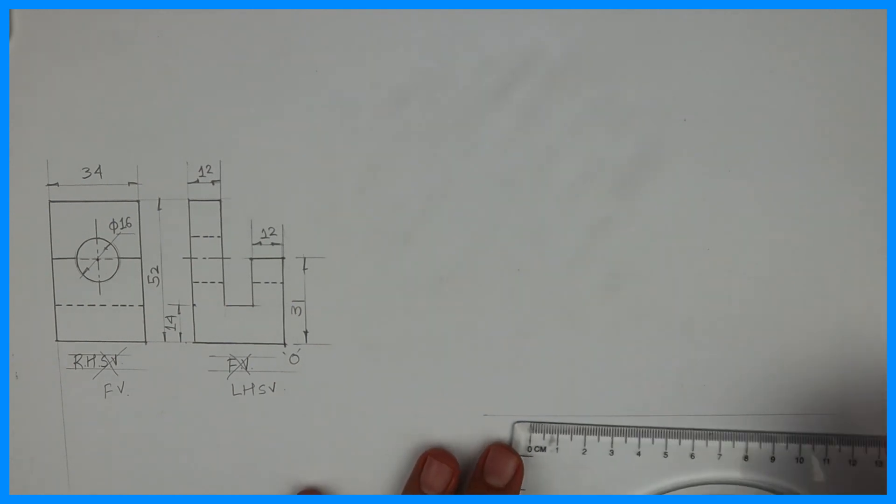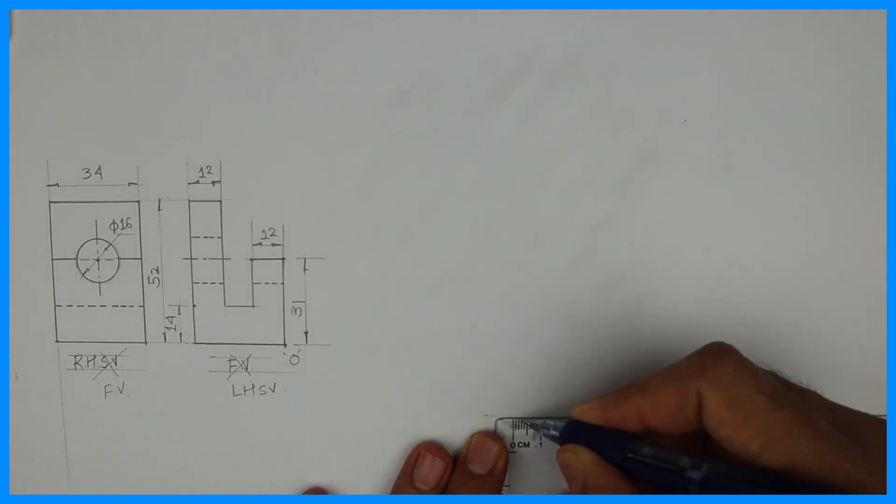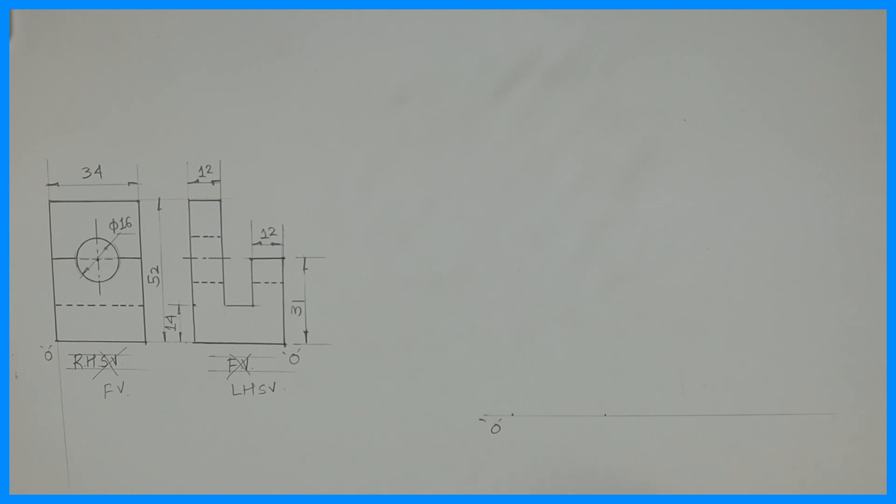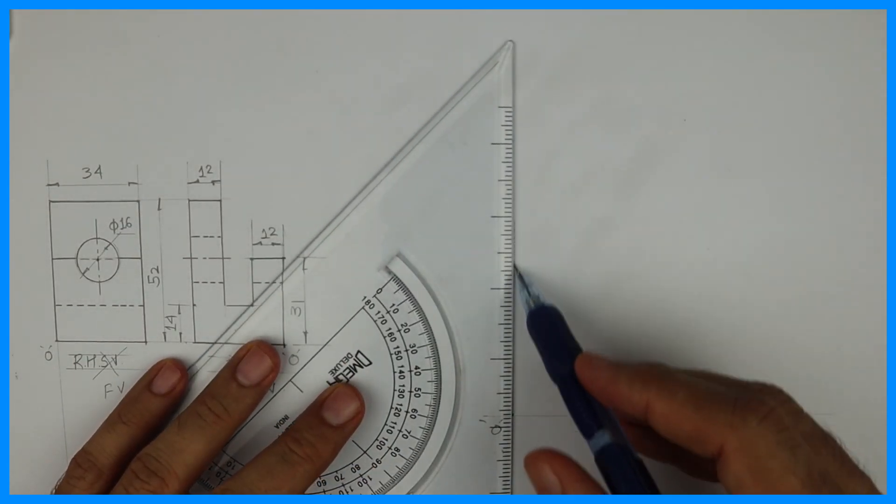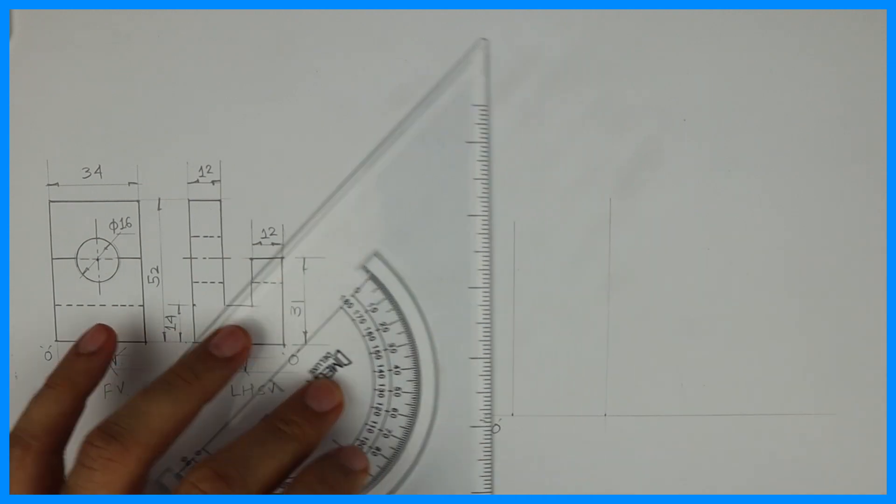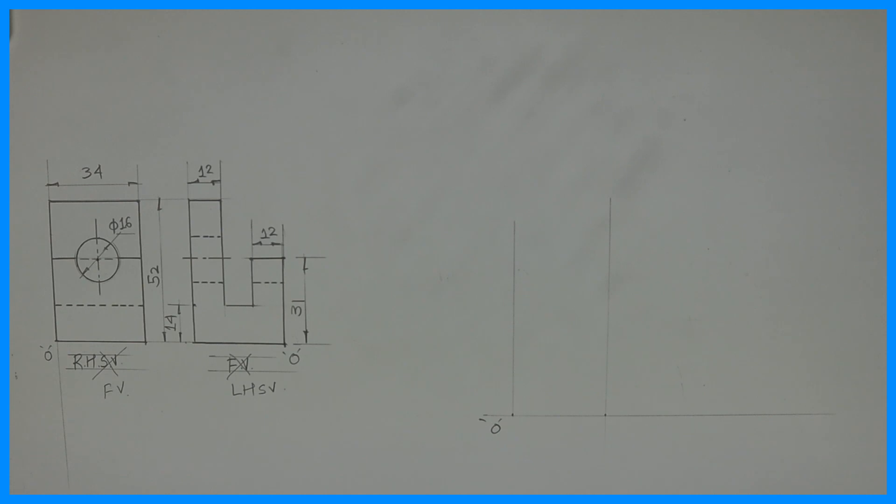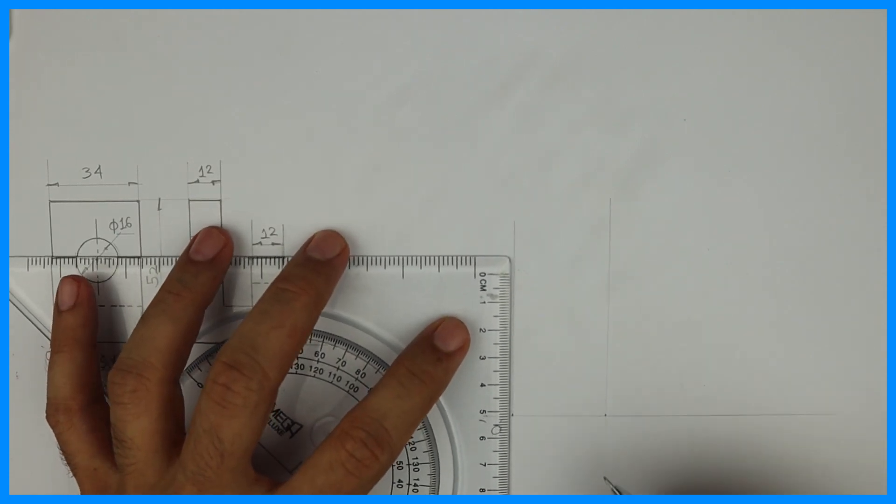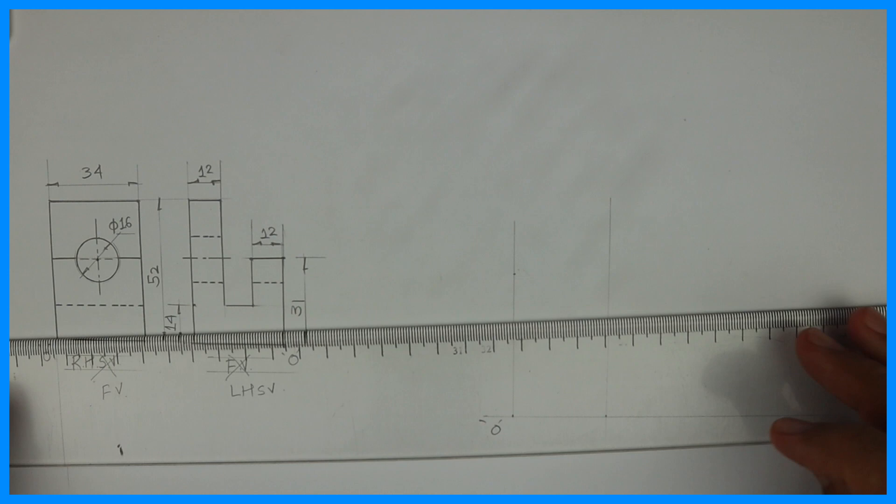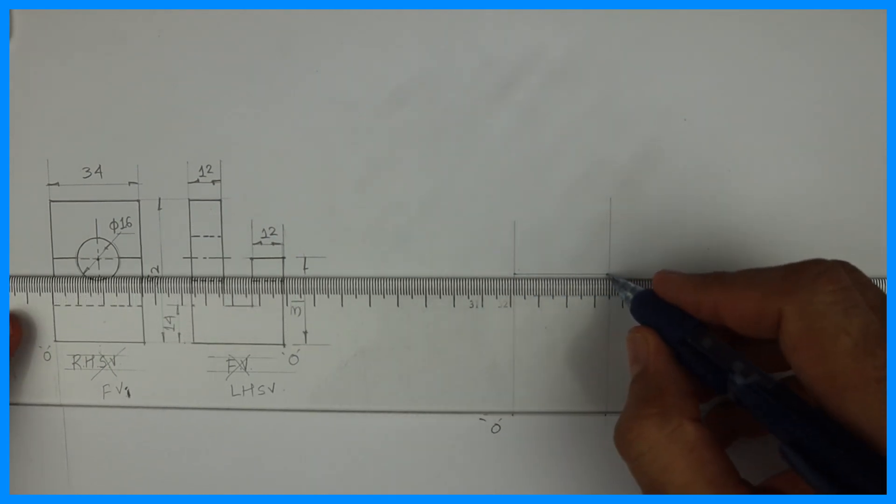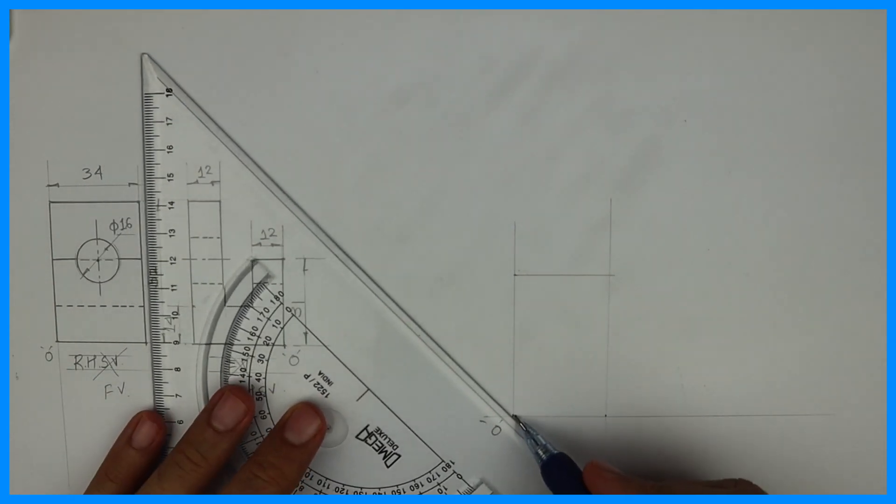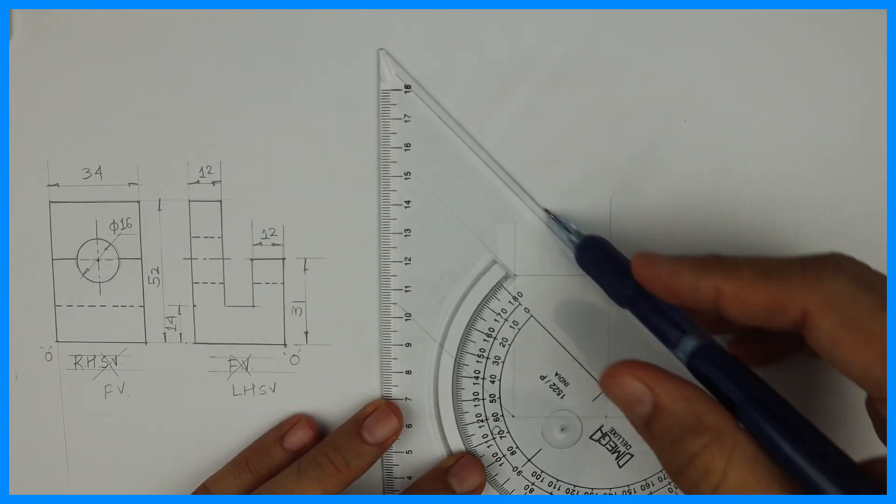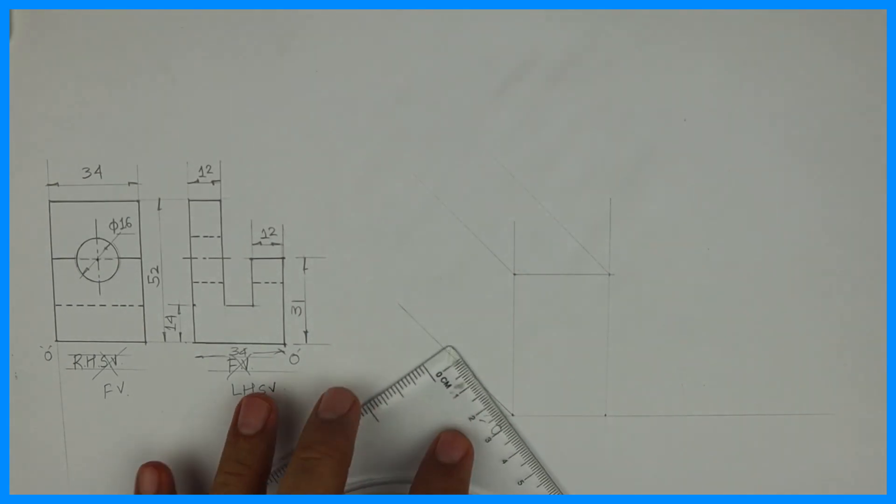See this front view will come here. Length is 34. Height is 52. Origin is here. See this. Now we'll draw a box. Height is 52. Width is 34.